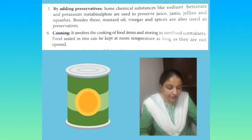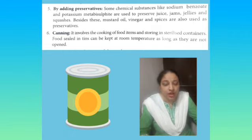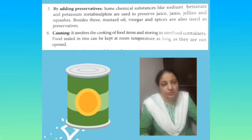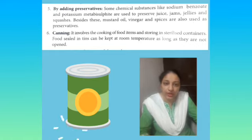'Canning involves the cooking of food items and storing in sterilized containers. Food sealed in tins can be kept at room temperature as long as they are not opened.' Canning ek aur process hai preservation ka jisme sealed tin boxes hote hain jisme food items rakhe jate hain. Market mein ye cans available hote hain. Agar hum inhe ek baar khol dein toh hume inhe fridge mein store karna padta hai.